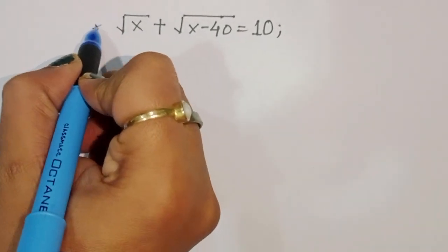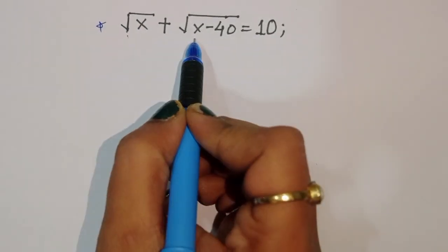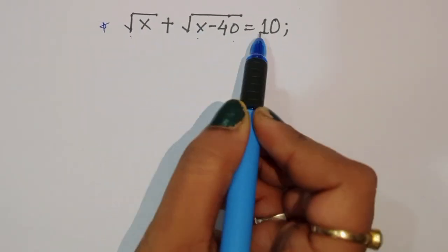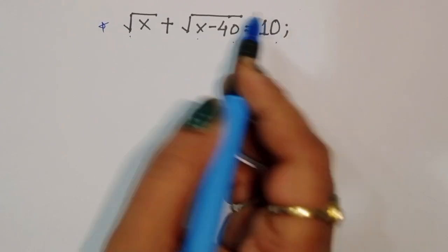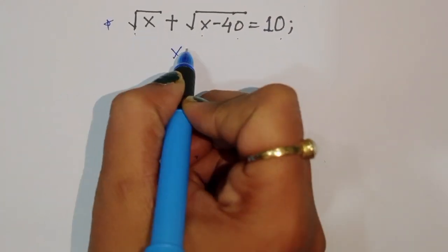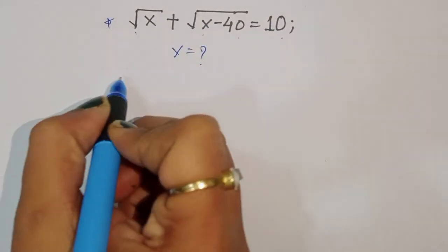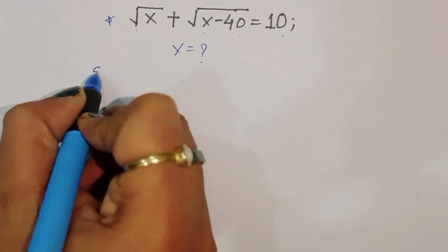The question is given: square root of x plus square root of x minus 40 is equal to 10. We have to find out the value of x. Let's see the solution.